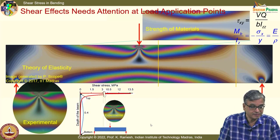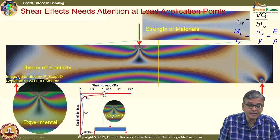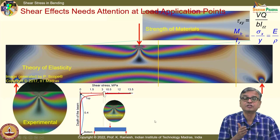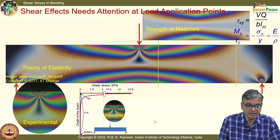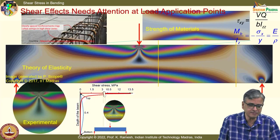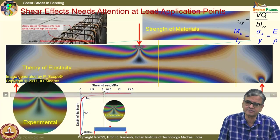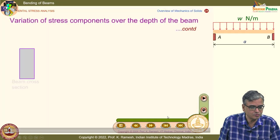These stress magnitudes are comparable to the bending stress, so failure can definitely happen unless you reinforce those areas. This is done in practice — people have stirrups to support this.